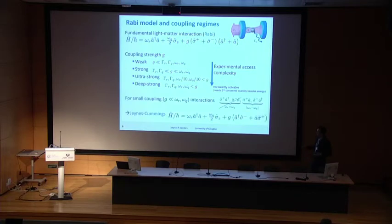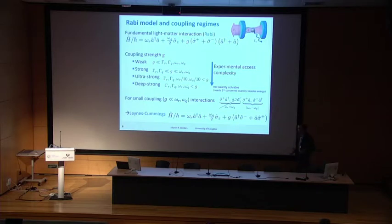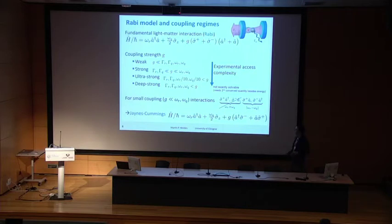Typically in our community we have small couplings and can apply the rotating wave approximation, which means higher-order counter-rotating terms can be neglected. We then end up with the Jaynes-Cummings Hamiltonian, as shown here.